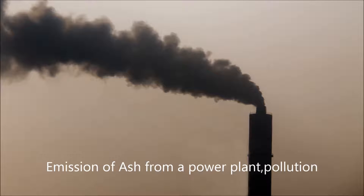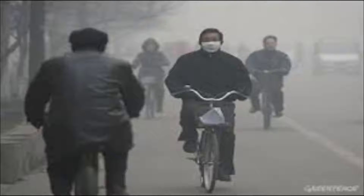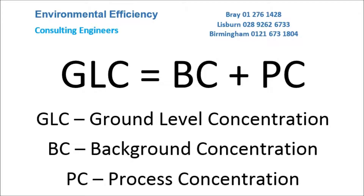The pollutants will generally rise from the stack and level out, sometimes as a visible cloud. The pollutants will then disperse over a wider area due to the wind and become less concentrated. At some point the pollutants will fall to the ground. The ground level concentration is made up of the background level and the pollution from the stack, often referred to as the process contribution.